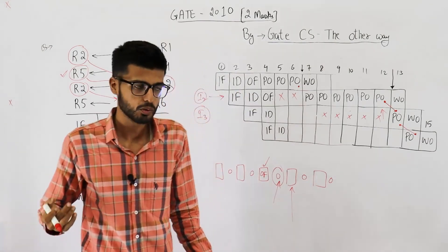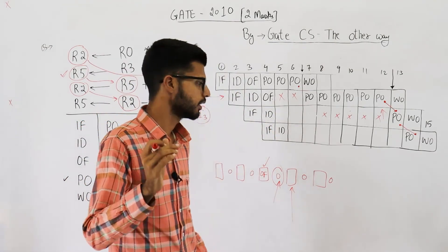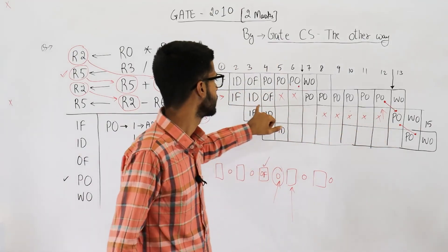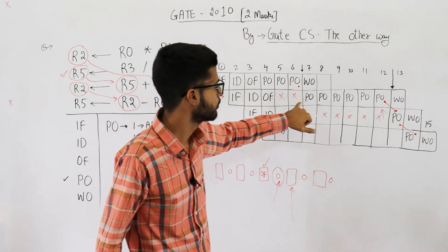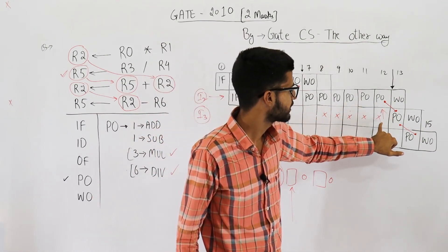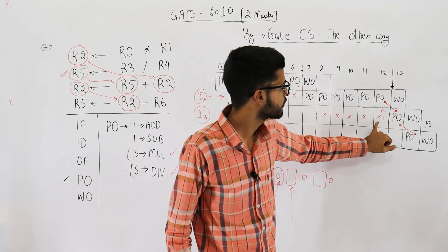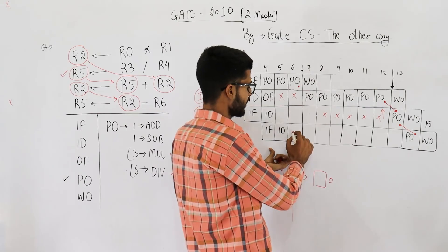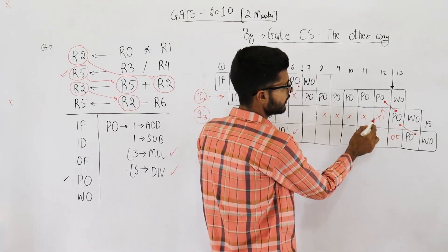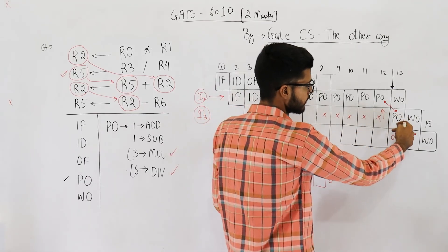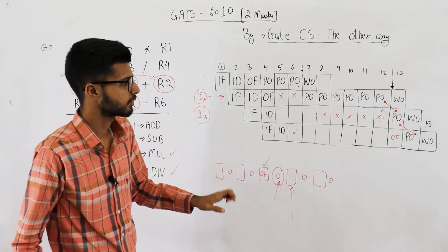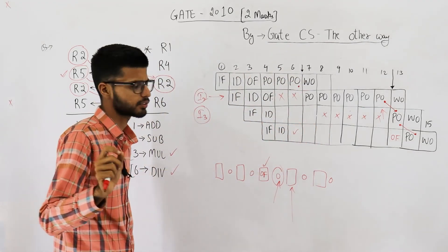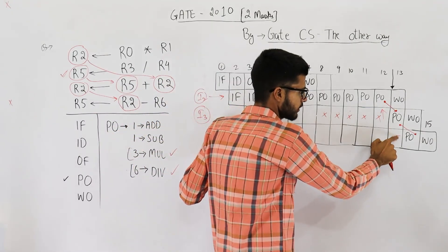To conclude, for the purpose of solving GATE questions, I suggest you simply neglect the operand fetch stage in these complex cases. The hardware takes care of everything, and overcomplicating the OF placement is not necessary for the exam. Just neglect the OF stage altogether — that's it.